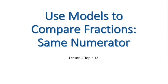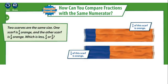We use models to compare fractions with the same numerator. Topic 13, open page 692. We have here two scarves that are the same size. The first one is 5 over 6 orange and the second one is 5 over 8 orange. Which is less — 5 over 6 or 5 over 8? Both fractions have the same numerator, or the same upper number, which is 5, but different denominators, or different lower numbers.